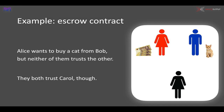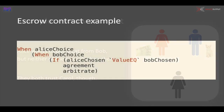So what are we seeing here? We see money being deposited in a contract, we see payments being made, and we see choices being made by multiple participants. Let's see how those look in an example contract.